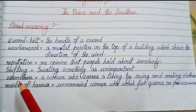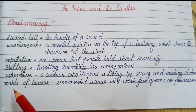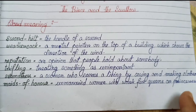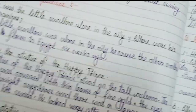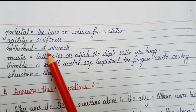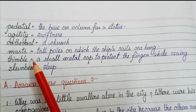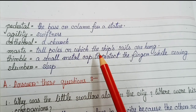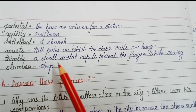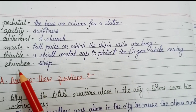Trifling - treating something as unimportant. Seamstress - a woman who earns a living by sewing and making clothes. Maids of honor - unmarried women who walk for queens or princesses. Pedestal - the base or column for a statue. Agility - swiftness. Cathedral - a church. Mast - tall poles on which the ship's sails are hung. Thimble - a small metal cap to protect the finger while sewing. Slumber - sleep.